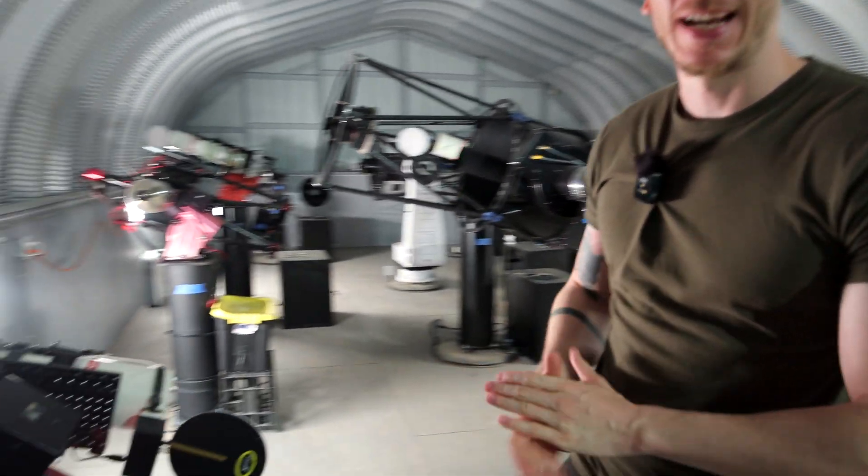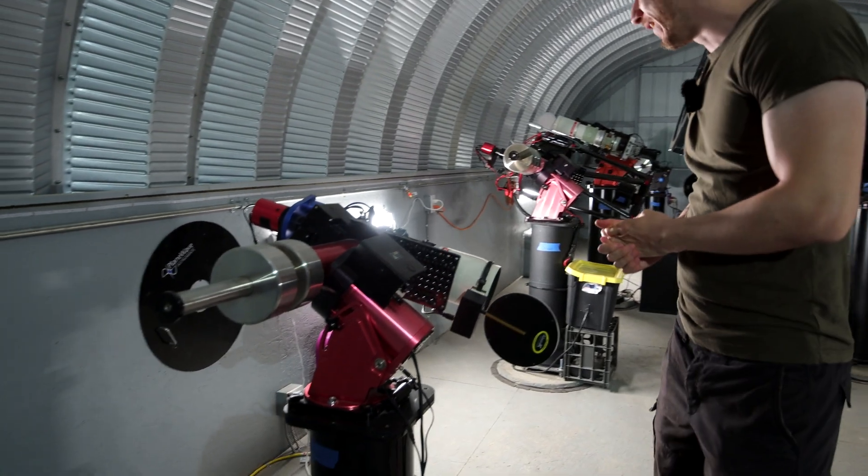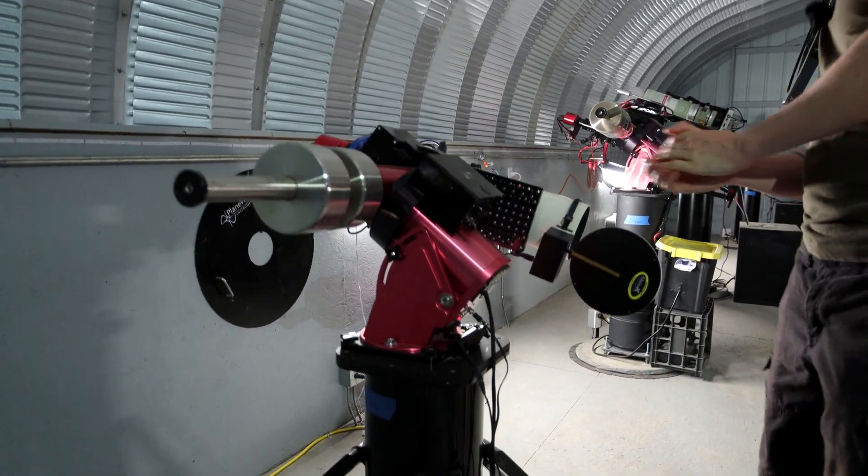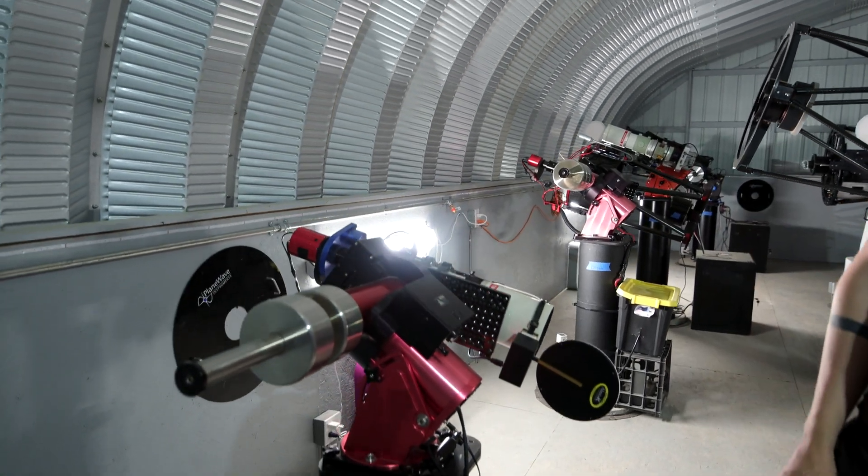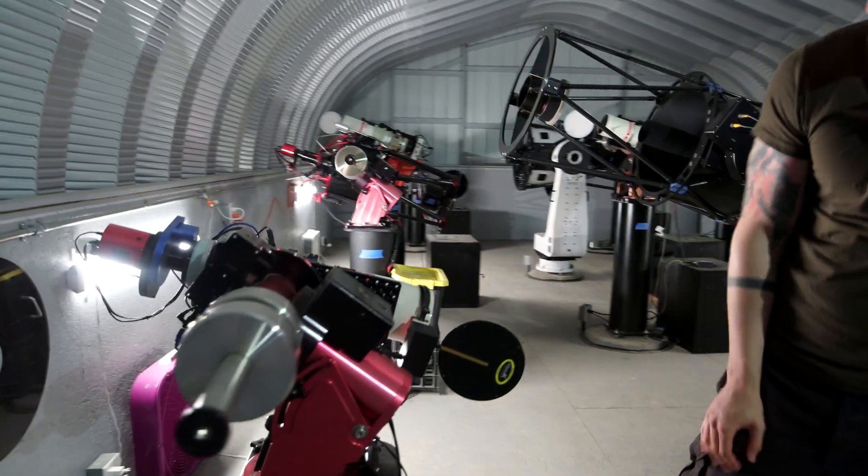Then here we have another Takahashi telescope. It is the FSQ-106 with another Paramount mount. And look at this tripod slash pier, super fat.